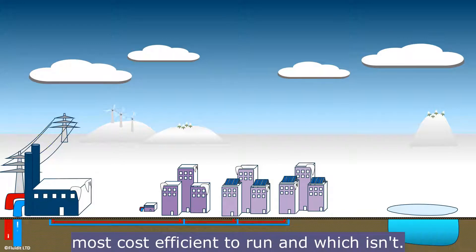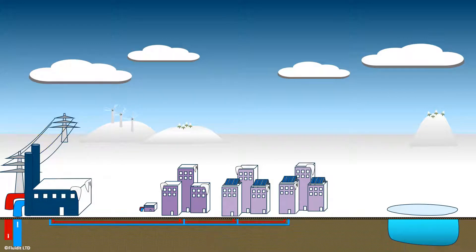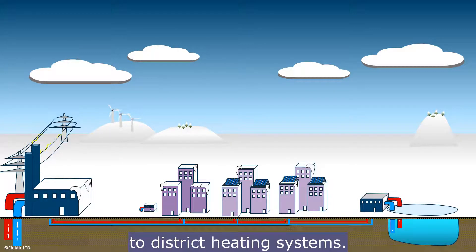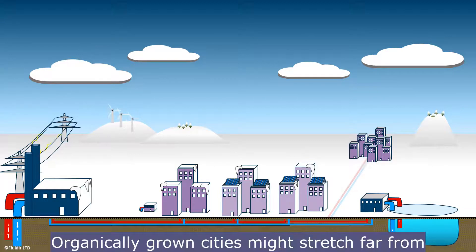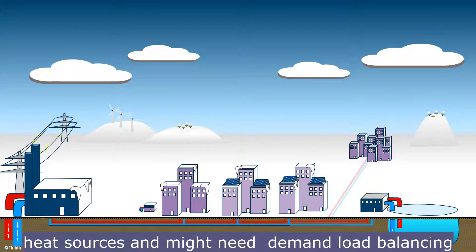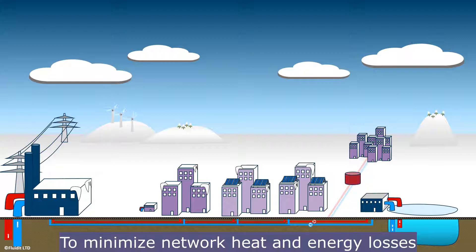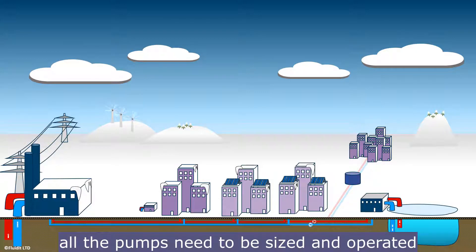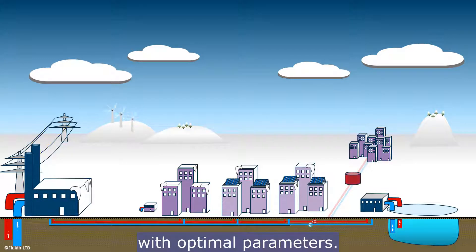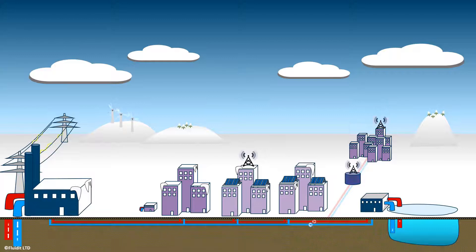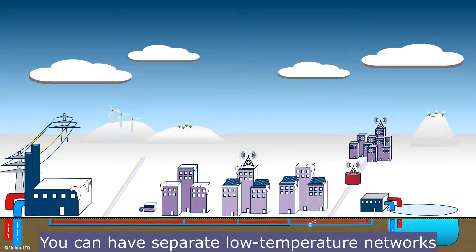The prices of electricity and fuels are ever-changing, affecting which plant is most cost-efficient to run. District cooling systems are built in parallel to district heating systems. Organically grown cities may stretch far from heat sources and might need demand load balancing with heat accumulators to minimize network heat and energy losses. All pumps need to be sized and operated with optimal parameters.